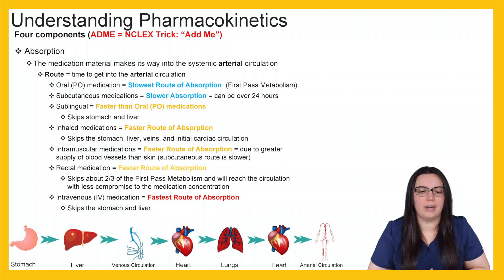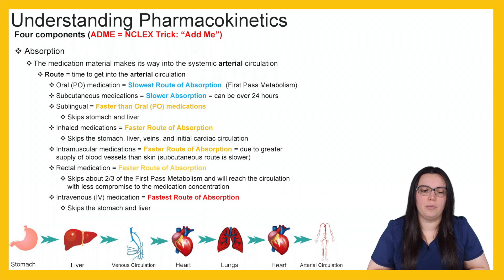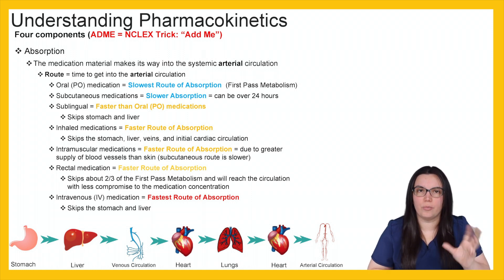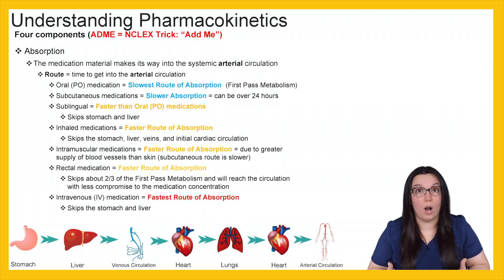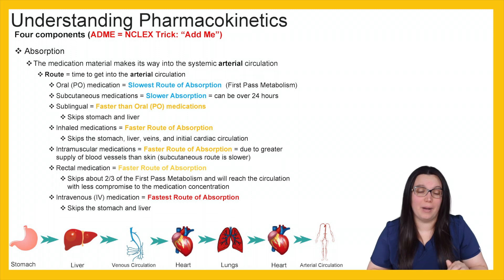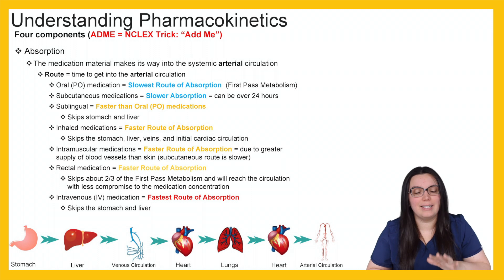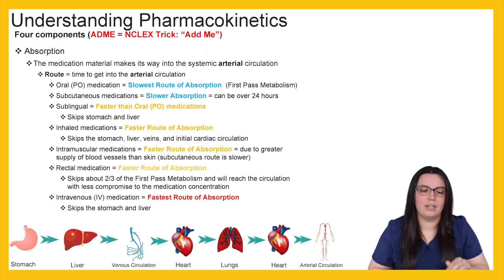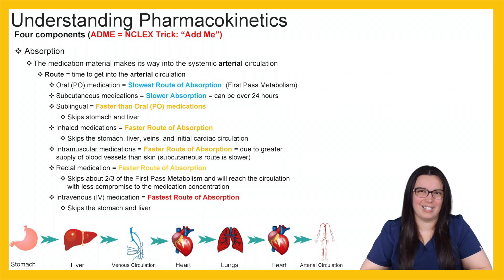Intramuscular medications are also a much faster route of absorption due to the greater supply of blood vessels within our skin — subcutaneous routes are a little bit slower, intramuscular routes are faster. Rectal medications are also a faster route because they skip two thirds of that first pass metabolism and reach circulation with less compromise to medication concentration. Our fastest route of absorption is intravenous IV because it skips the stomach and liver and gets directly where it needs to go.